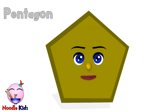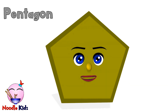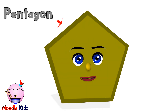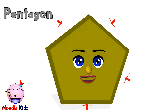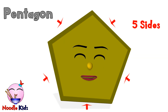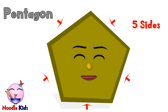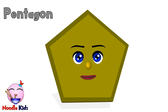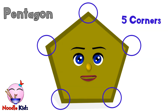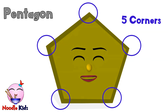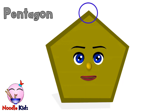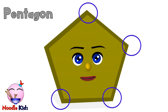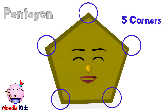My name is Pentagon. Let's see how many sides I have: 1, 2, 3, 4, 5 sides. So I have 5 sides. I have 5 corners as well. Let's count together: 1 corner, 2 corners, 3 corners, 4 corners, 5 corners.